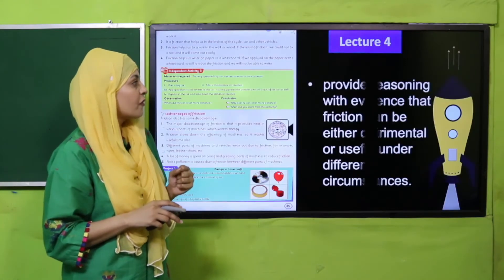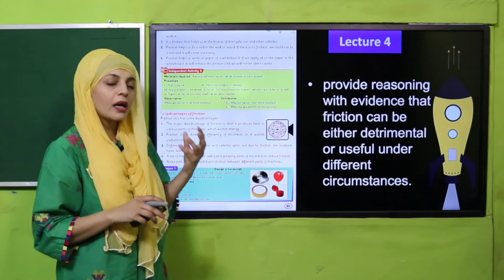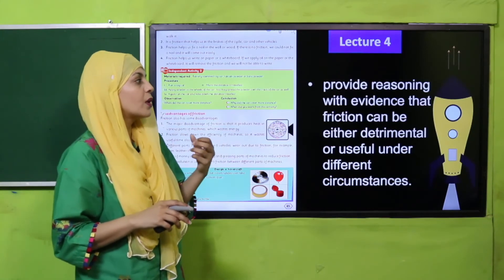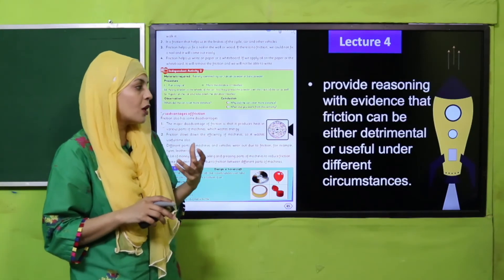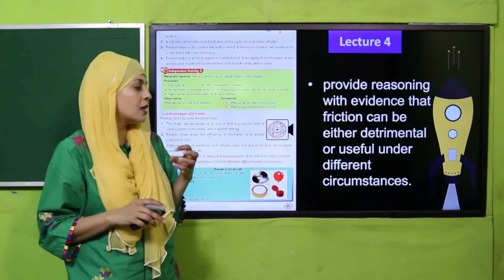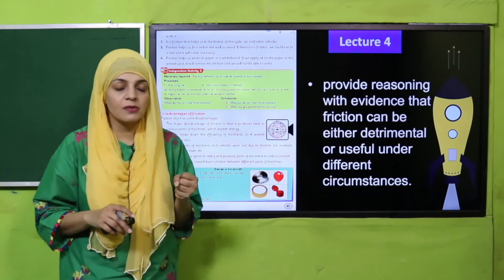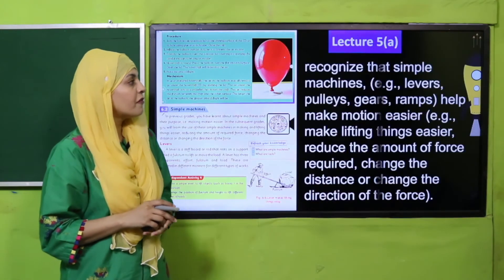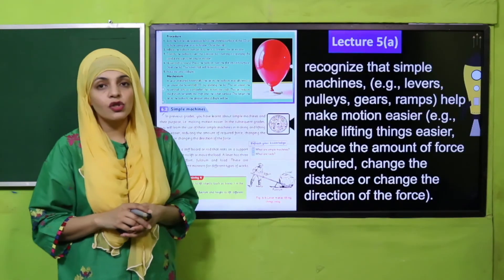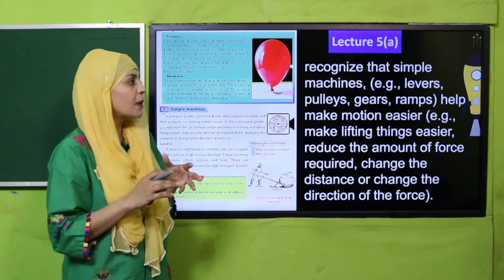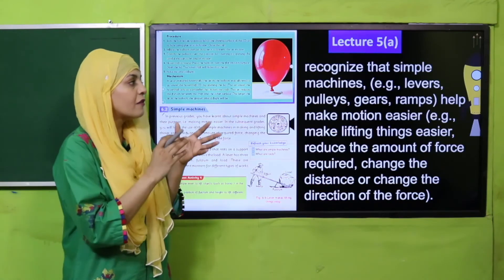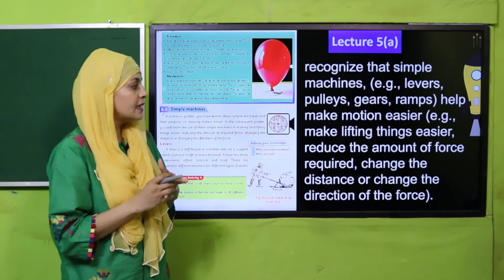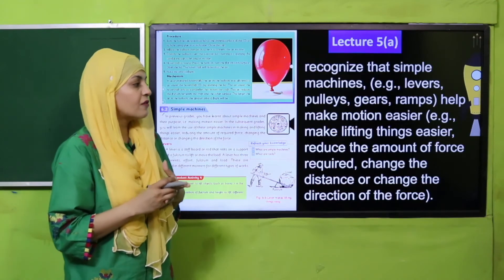In Lecture 4, the students will again be able to provide reasoning with evidence that friction can be either detrimental or useful under different circumstances. Then in Lecture 5A, the students will be able to recognize that simple machines — that is lever, pulley, gear, and ramps — help make motion easier.